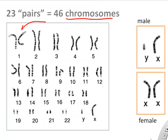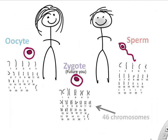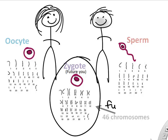You have 23 pairs, or 46 chromosomes — actually 22 pairs and then a set of sex chromosomes. In females, that's an X pair, and in males, that's an X and Y. That's your DNA when people talk about chromosomes — it's just your organized, packaged DNA.